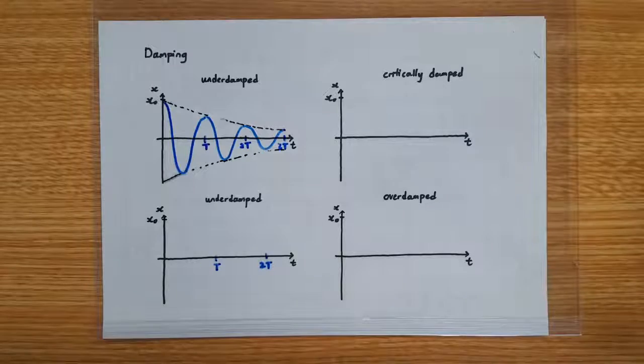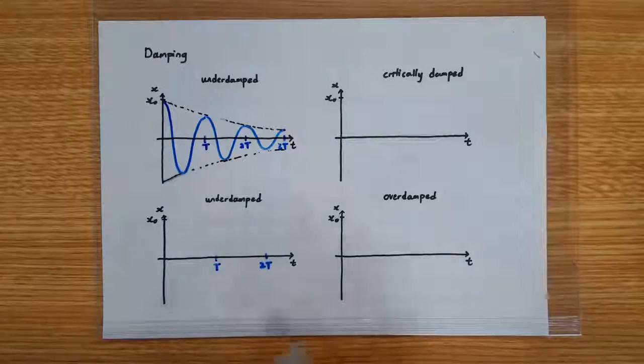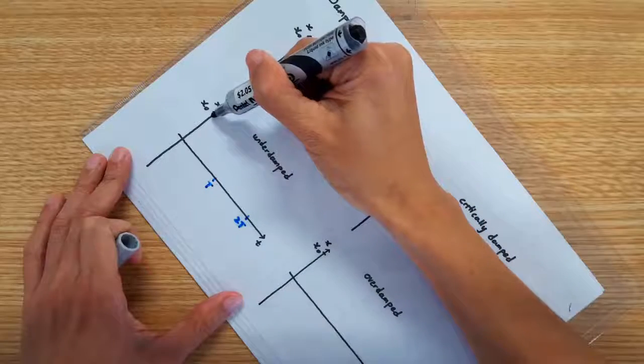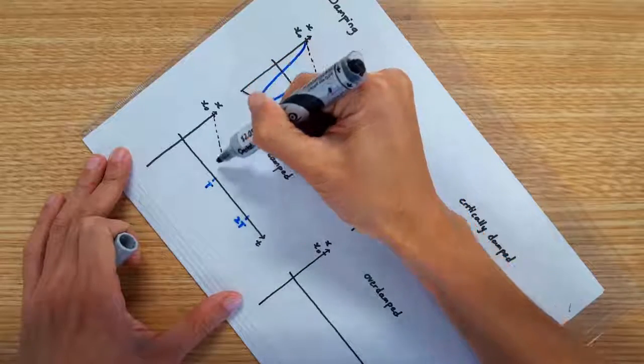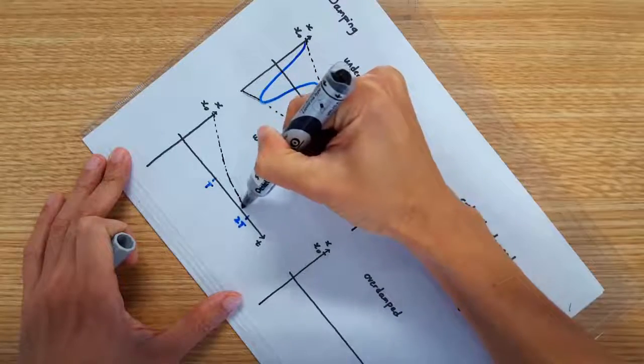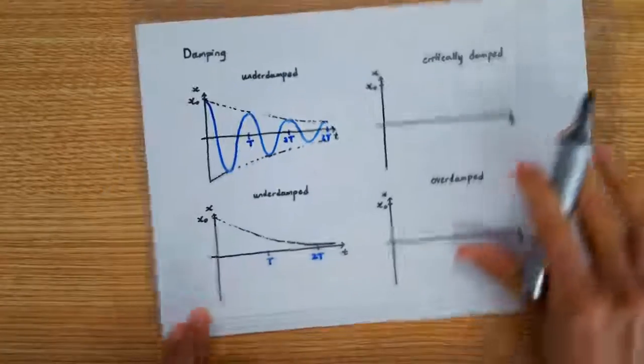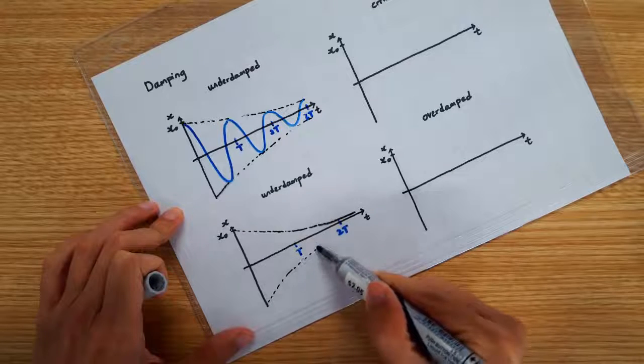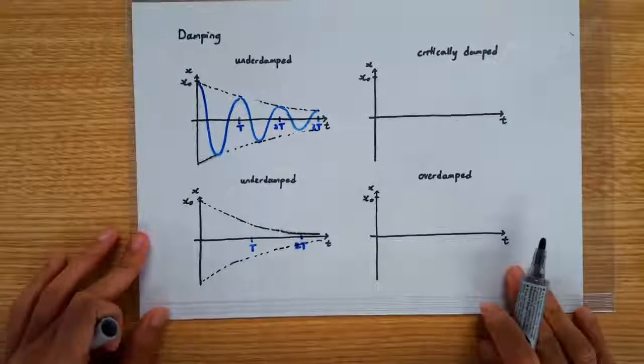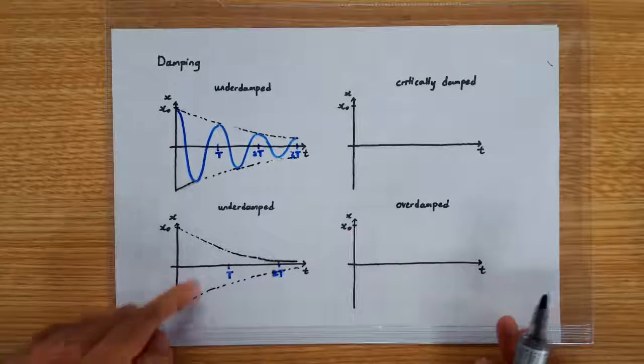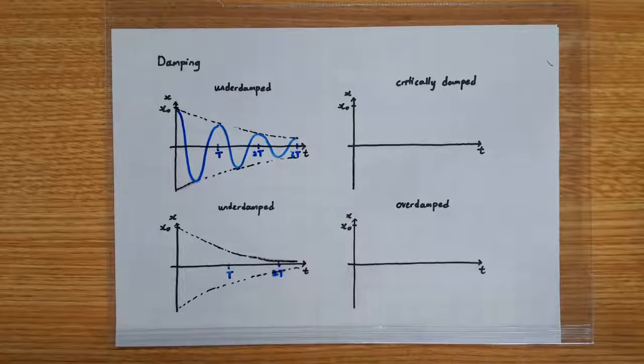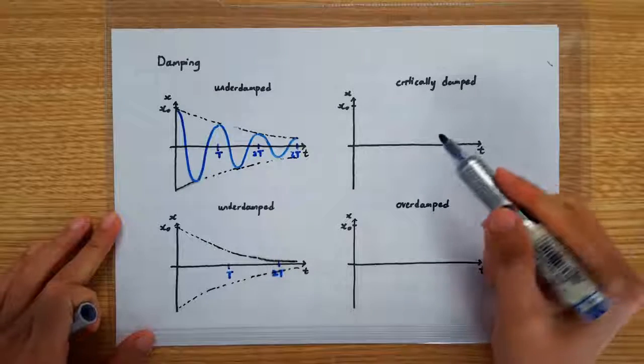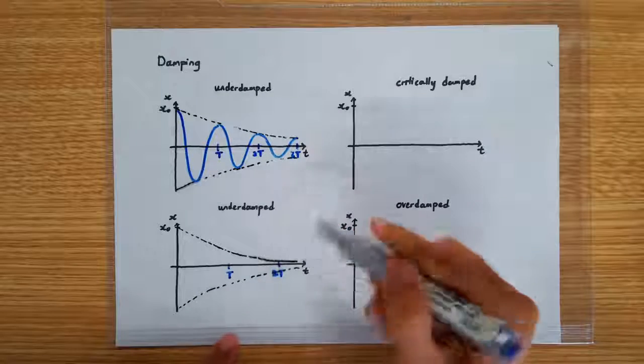And if we increase the amount of damping, then the decay is going to happen at a faster rate. So, we're going to draw a steeper decay graph. So, these two are supposed to be mirror images of each other. Now, let's squeeze in the oscillations. So, again, one cosine wave in each period.